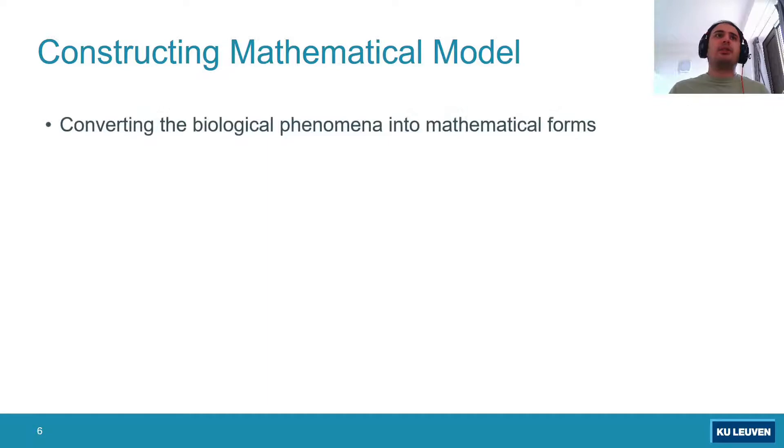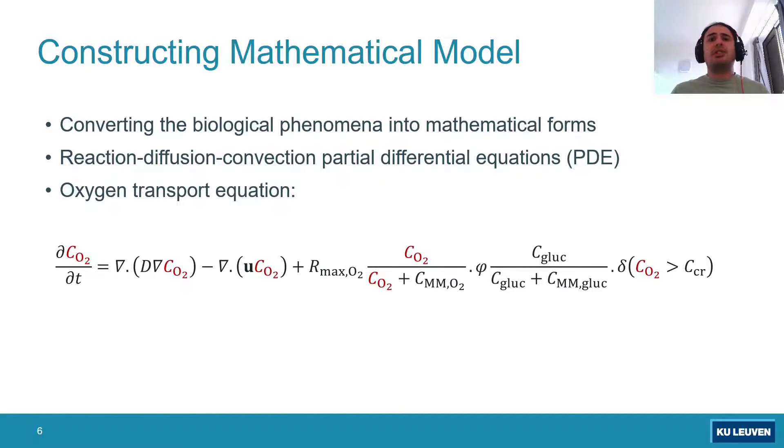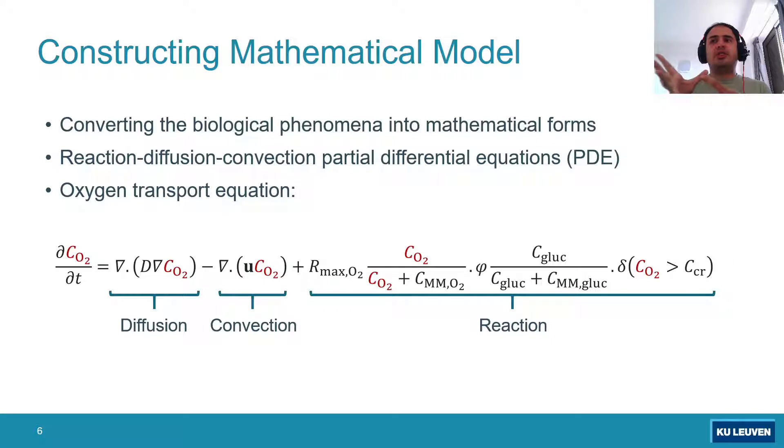For constructing the mathematical model, we convert the biological phenomena into mathematical forms. The mathematical form is the famous reaction diffusion convection partial differential equation. For the oxygen transport equation, it tracks the change of concentration of oxygen over time, showing how oxygen diffuses, how it gets convected, and how it reacts with the surrounding environment, in this case with glucose and other factors in the microwells, as well as how we should consider the critical concentration of oxygen. These are all embedded into this reaction term.